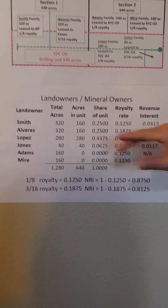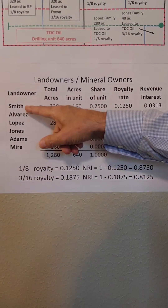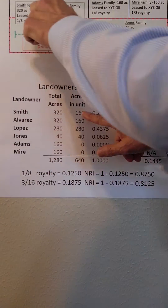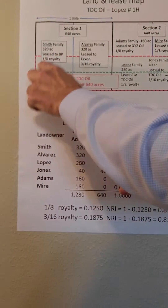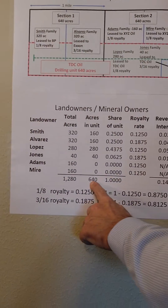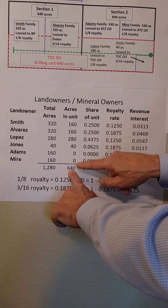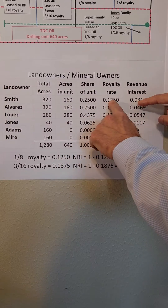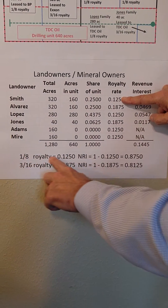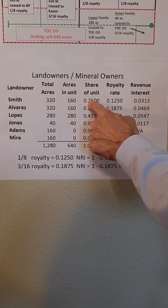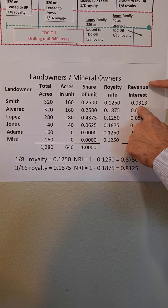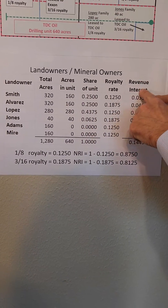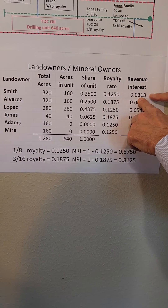Let's look at the landowner and mineral owner summary. The Smith family owns 320 acres of land but only 160 acres are in the unit, and the unit is 640 acres. So you divide 160 by the total acreage and get 0.25. Their royalty rate on the 1/8th royalty is 0.125. You multiply these two numbers together, so their revenue interest is 0.03125 — the Smith family is going to get about 3% of the revenue from this well.